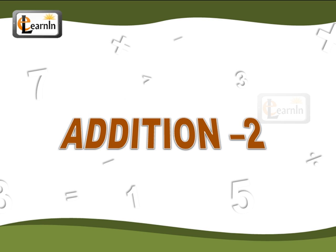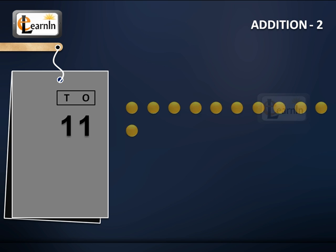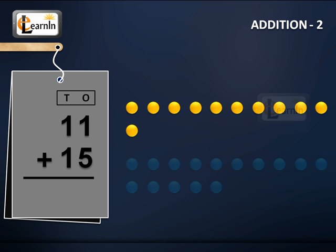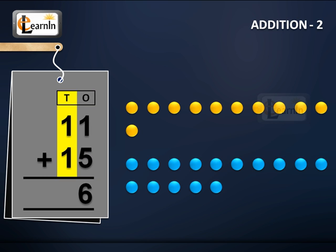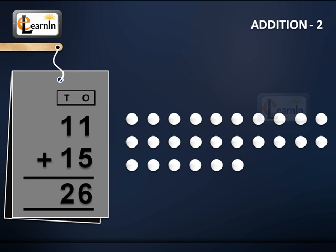Addition Part 2. 11 plus 15. Adding the digits in the ones place, we have 1 plus 5 equals 6. Now adding the digits in the tens place, we have 1 plus 1 equals 2. Therefore, 11 plus 15 equals 26.